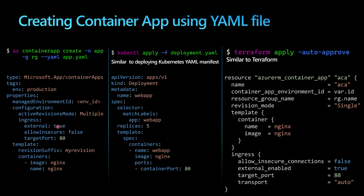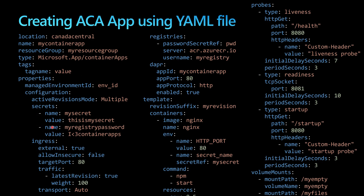The examples shown here represent only a few of the many options available within the YAML file — even in this slide, not all options are displayed. You can do a lot with the YAML config: you can include configuration for probes, secrets mounting, volumes, ingress, revisions, and much more. Let's now see a live demonstration of how this works.